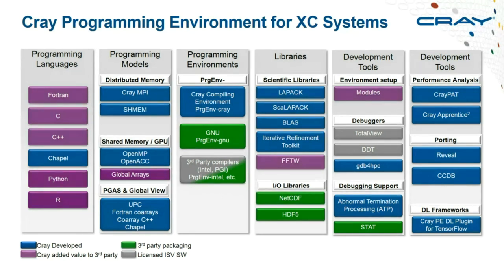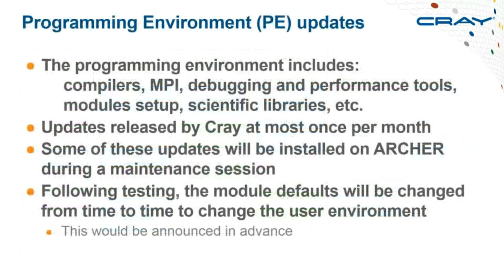There are also performance tools, Reveal for scoping loops for OpenMP, a comparative debugger, and some deep learning optimization tools not really relevant to Archer. I'm going to concentrate on a specific subset: changes in compilers, changes in message passing, and tools. The goal is to give a feel for updates over the last year and a half — what's changed with the current install and what's coming next.